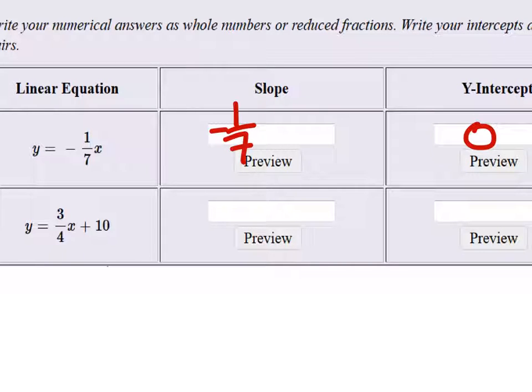And the y-intercept? Yeah, so we do have to be careful on this one. Just don't put a 0 there. They're going to want to see this as an ordered pair.